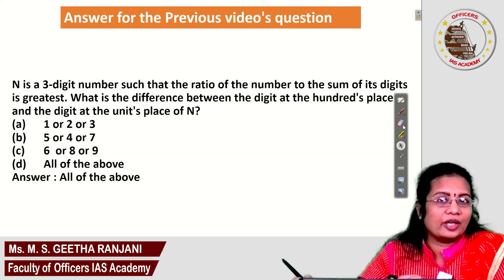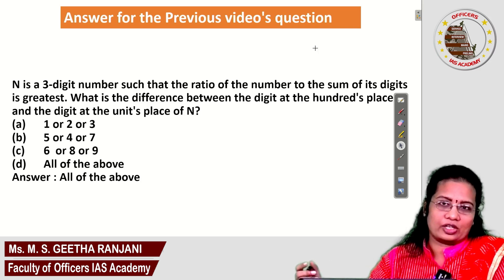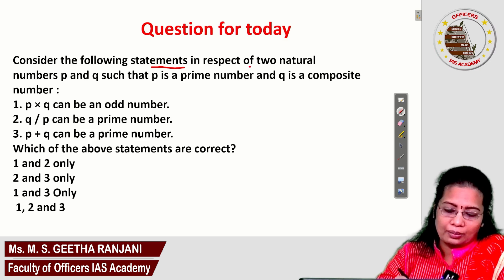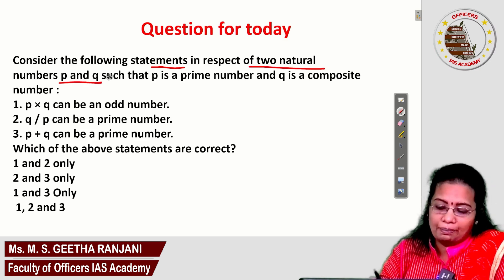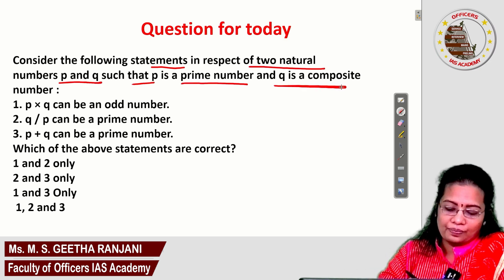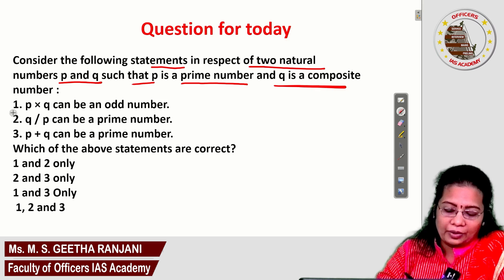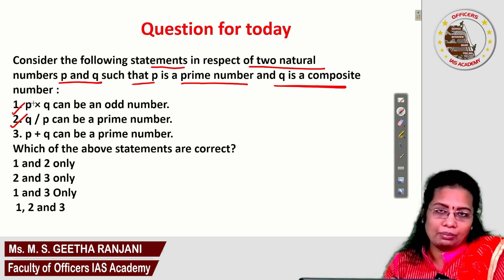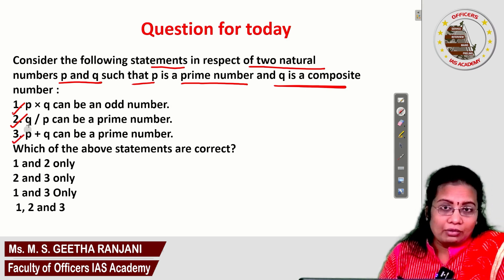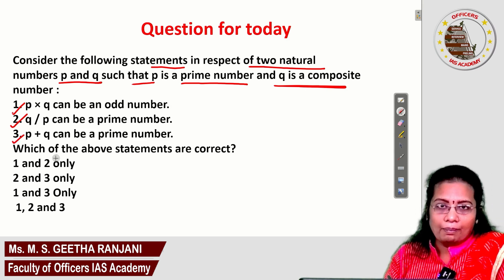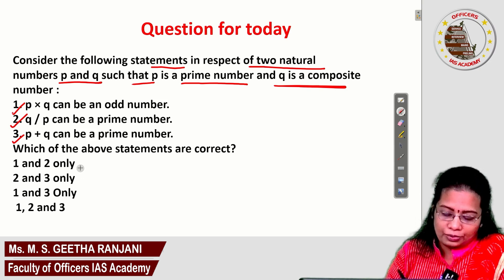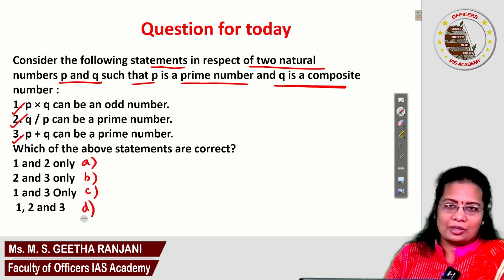Congratulations to those who got the previous question correct. Today's question: consider the following statements for two natural numbers P and Q, where P is a prime number and Q is a composite number. Statement 1: P × Q can be an odd number. Statement 2: Q / P can be a prime number. Statement 3: P + Q can be a prime number. Which of the above statements are correct? Choose from options A, B, C, or D, and post your answers in the comment section.